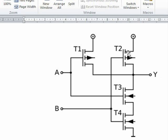So both T1 and T2 are not conductive, so Y is not connected at all to the positive here. Both T3 and T4 are conductive, so Y is going to be connected very well to zero volts.